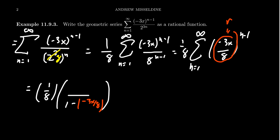And then the a here is just the first term of the sequence. So when we plug n equals 1 into this expression, what do we get? We're going to end up with negative 3x over 8 to the 1 minus 1 power. Now, good news, that power is just going to be 0 and something raised to the 0 power is just a 1. And so we end up with 1/8 times 1 over 1 plus 3x over 8.